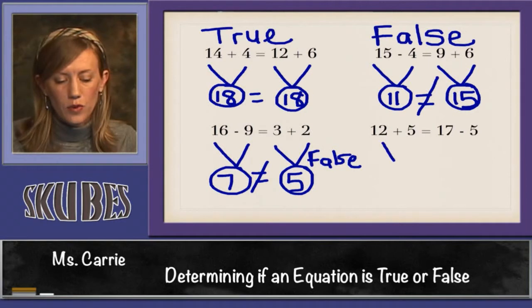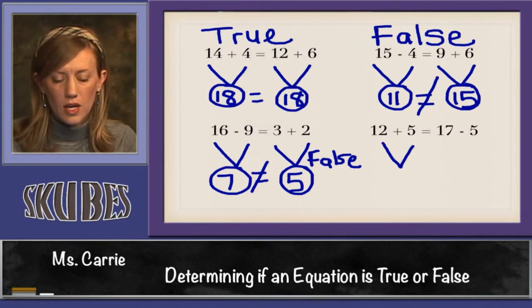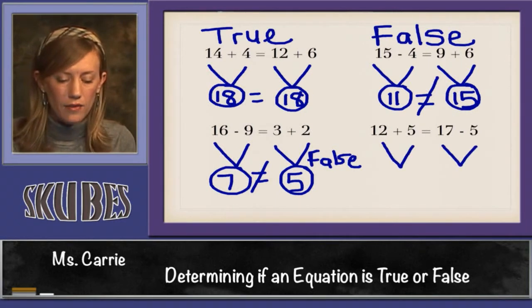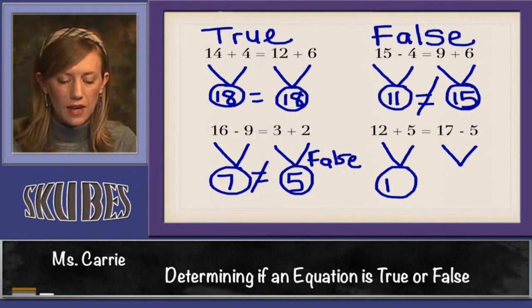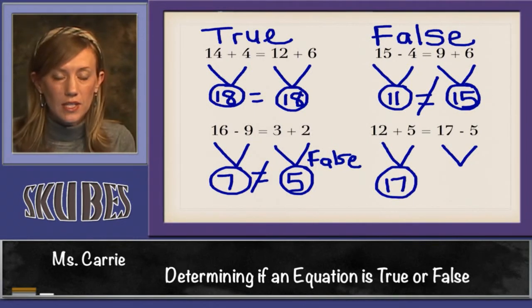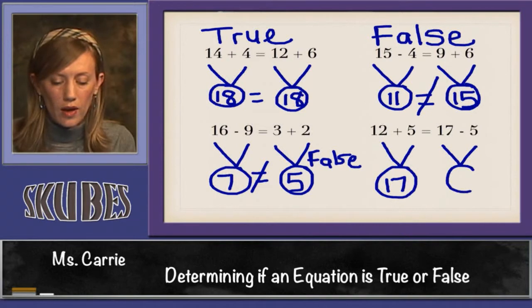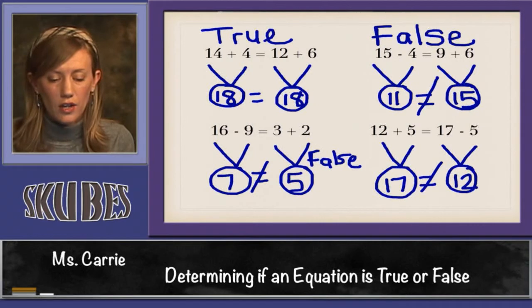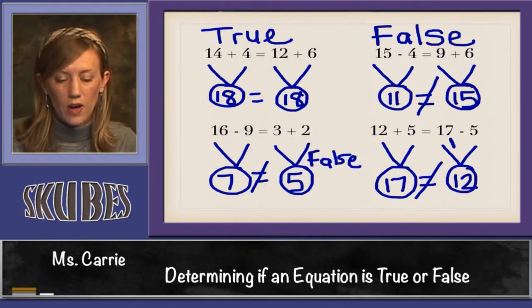Over here we have 12 plus 5 and 17 minus 5. Well 12 plus 5 is 17 and 17 minus 5 is 12. Are these two numbers equal to one another? No they aren't. This would be false.